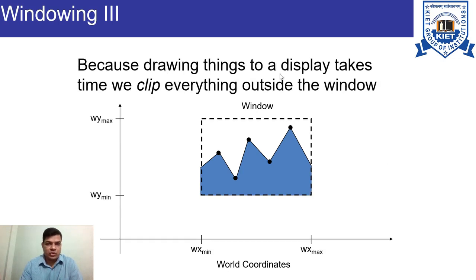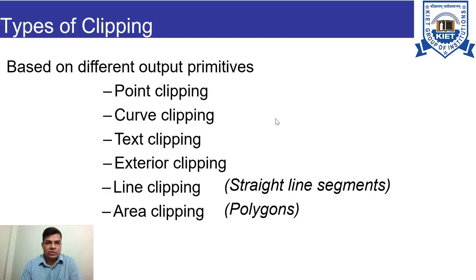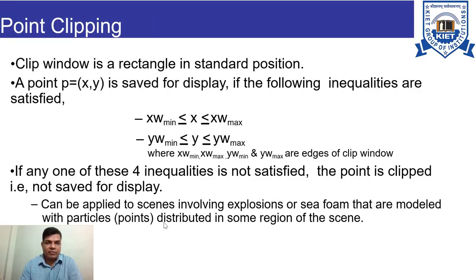Because drawing things to a display takes time, we clip everything outside the window. The part which is not inside the window is clipped, and the portion which is inside the window is visible. There are many types of clipping: point clipping, curve clipping, text clipping, exterior clipping, line clipping, and area clipping.